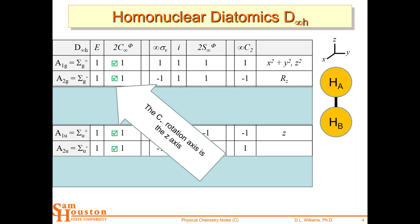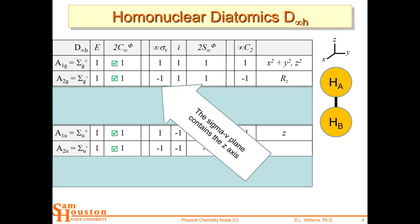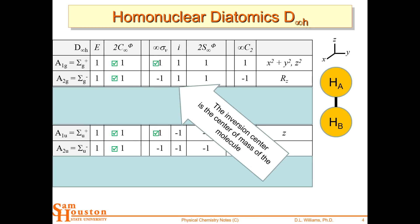Moving to the σv column: if I reflect the 1s orbital on atom A in any vertical plane, it stays the same color — it must be plus one. That eliminates A2G and A2U as options. For the inversion operation, the 1s orbital on A becomes the 1s orbital on B, and it stays the same color, so it's plus one under inversion. That narrows it down to A1G. The orbital has to be A1G.